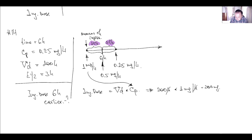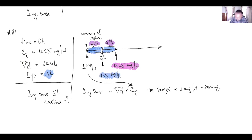We had 2 half-lives. At the moment of measurement, plasma concentration was 0.25 milligrams per liter, 6 hours after ingestion. During those 6 hours there were 2 half-lives, since each half-life is 3 hours. Counting backwards: after 3 hours we get 0.5 milligrams per liter, and after another 3 hours — 2 times higher again — we get 1 milligram per liter. That is why we used 1 milligram per liter to calculate the ingested dose.